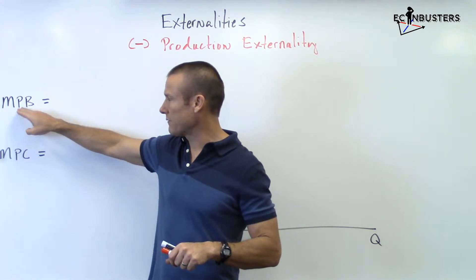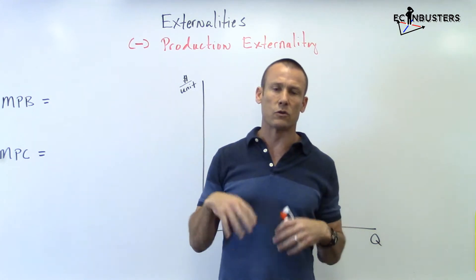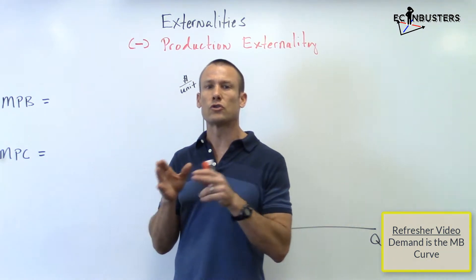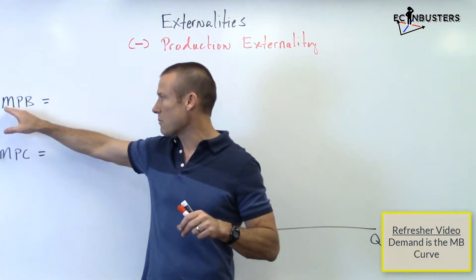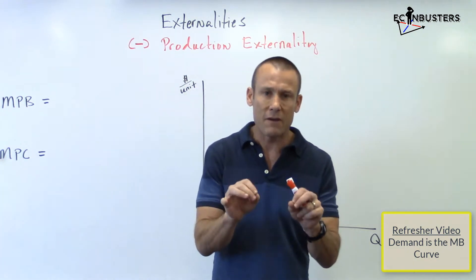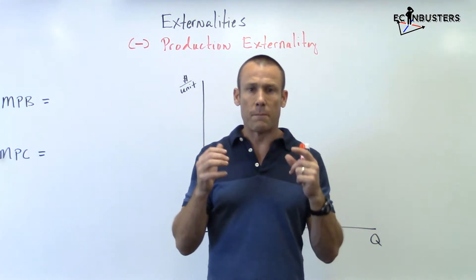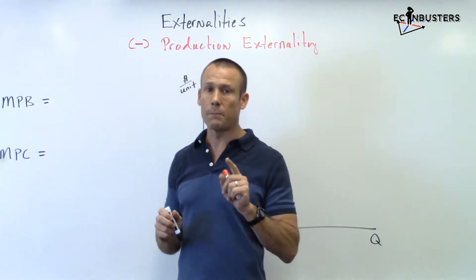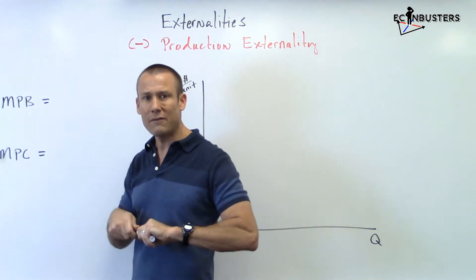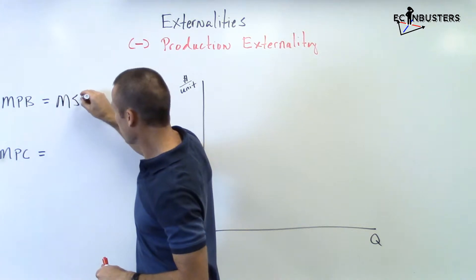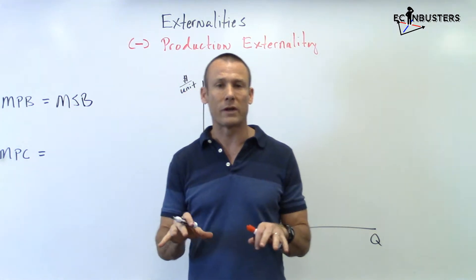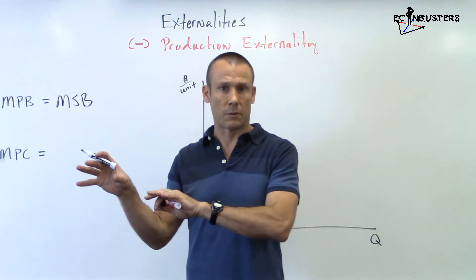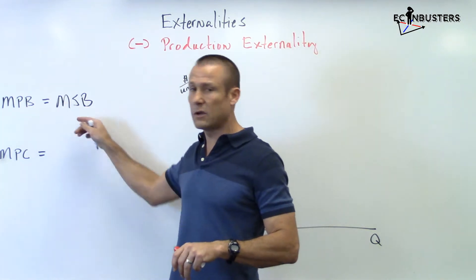First: marginal private benefit, or MPB. In earlier videos we've talked about marginal benefit, but basically what we've been talking about is the marginal private benefit — the benefit that goes to the consumer of the good. When I eat a hamburger, the benefit I get is my private benefit; only I am getting a benefit. What we've assumed up until now is that marginal private benefit equals marginal social benefit, meaning no third parties have been incurring harm or benefit from my consumption. If they're equal, no externality.